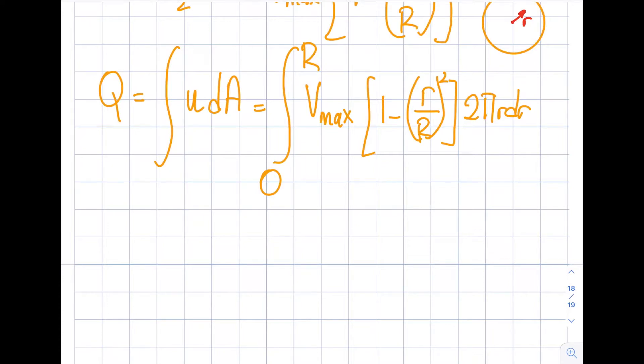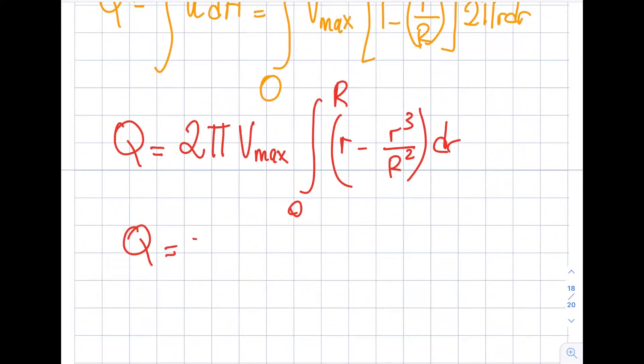So then the next step: what are the integral limits? It's going to be from zero to capital R. Note that it's not from minus R to capital R because the little r is defined from the center to outside. So it goes from zero to capital R. Let's continue. Can I take this 2π out of the integral? Yeah, so Q will be equal to 2π V_max times the integral.